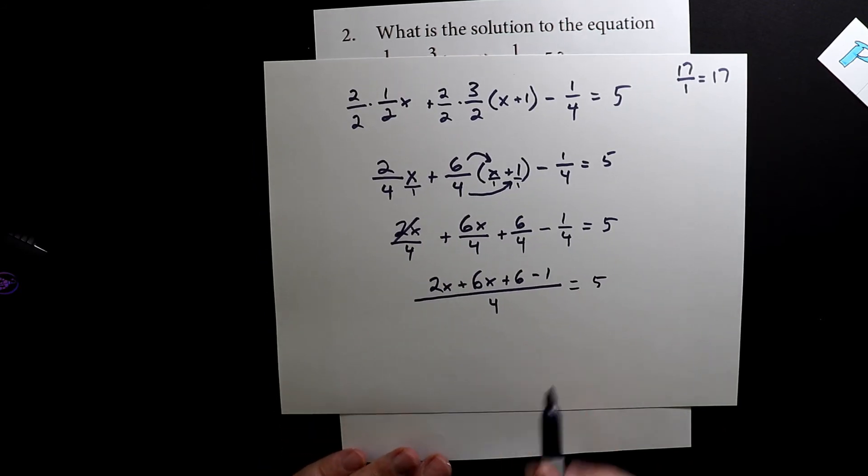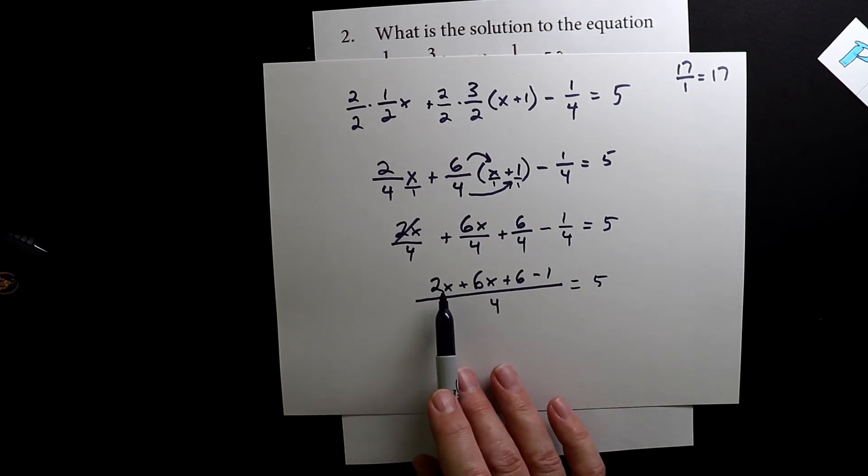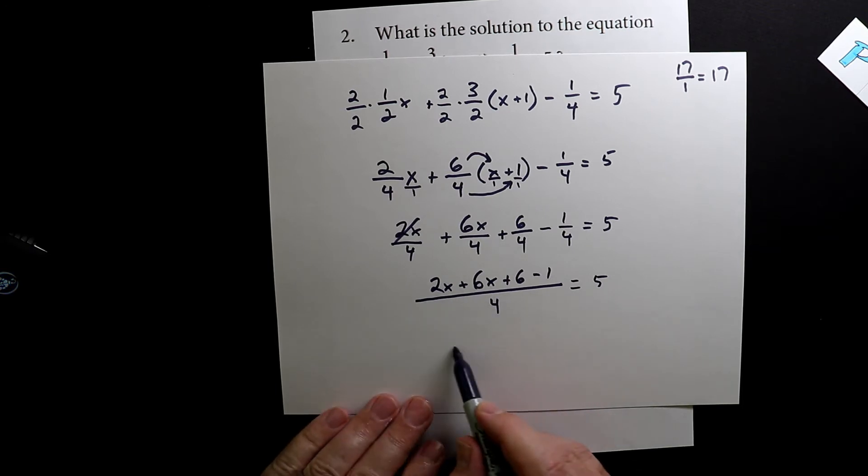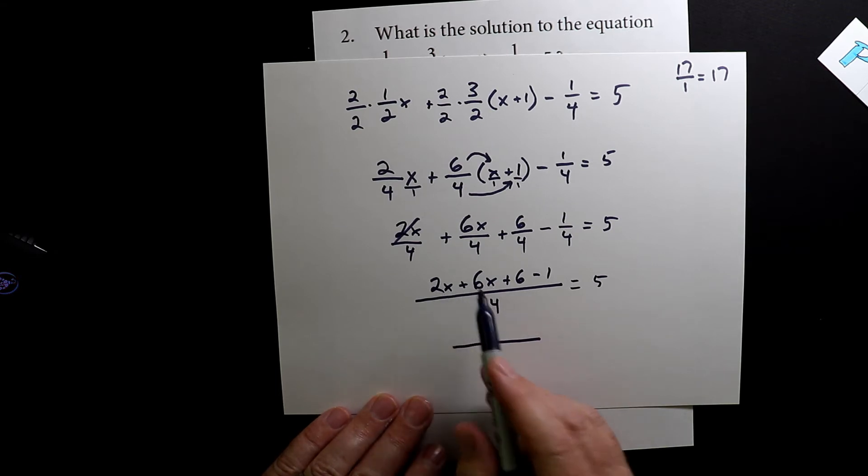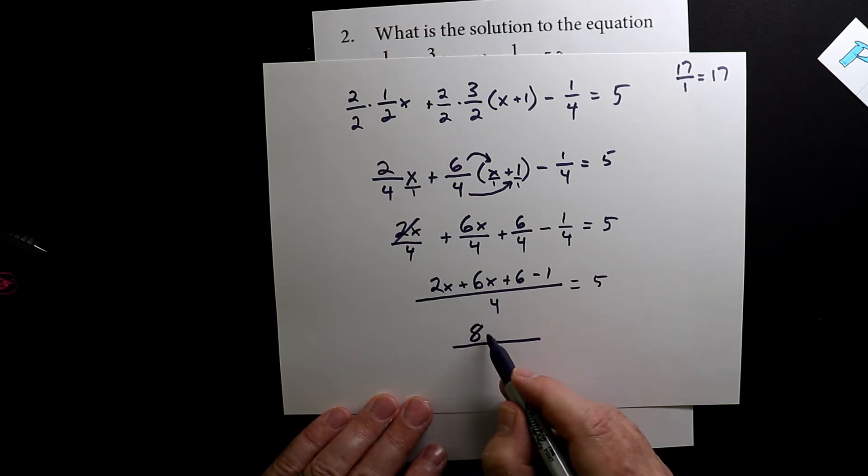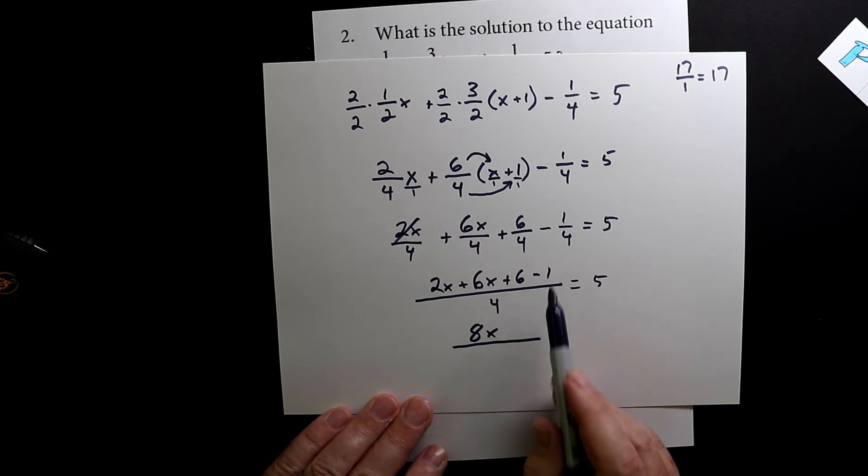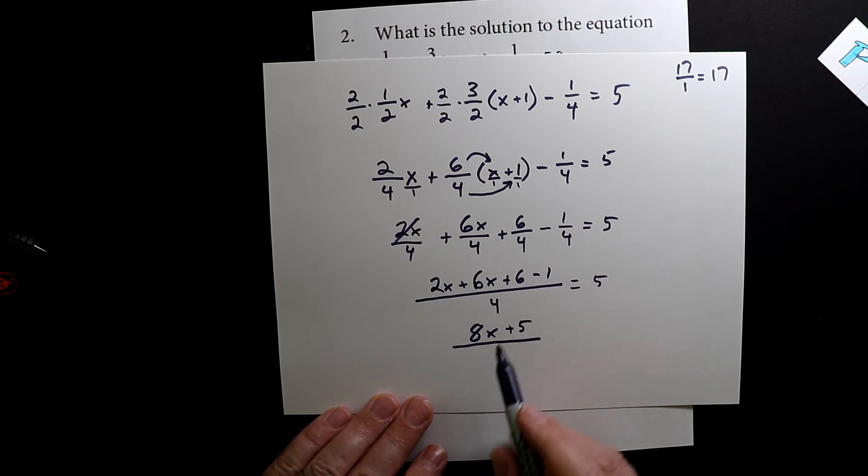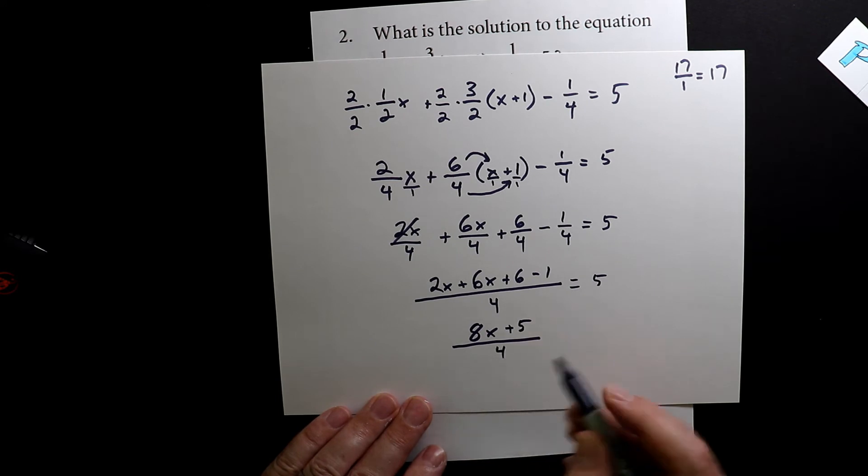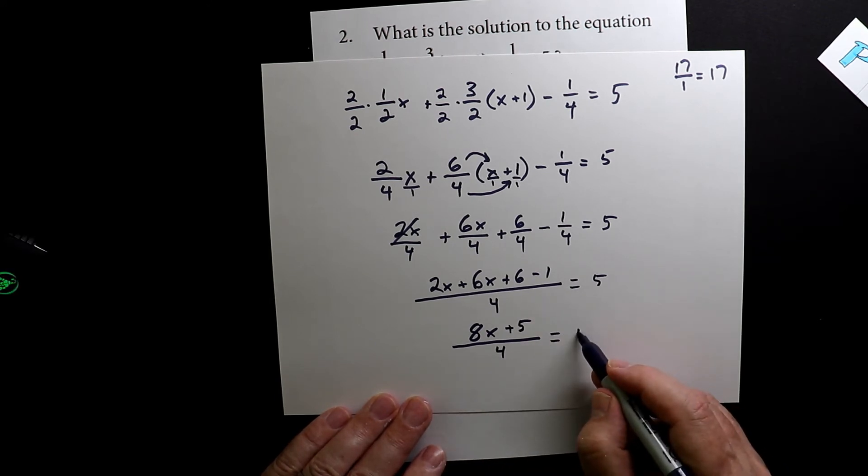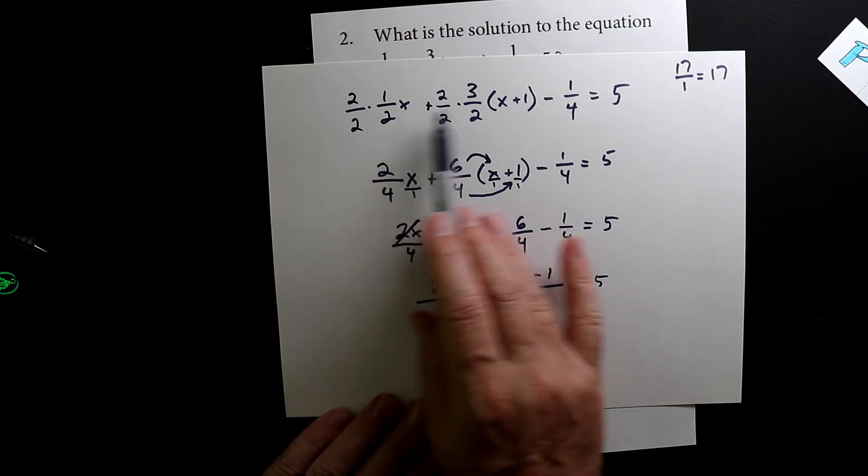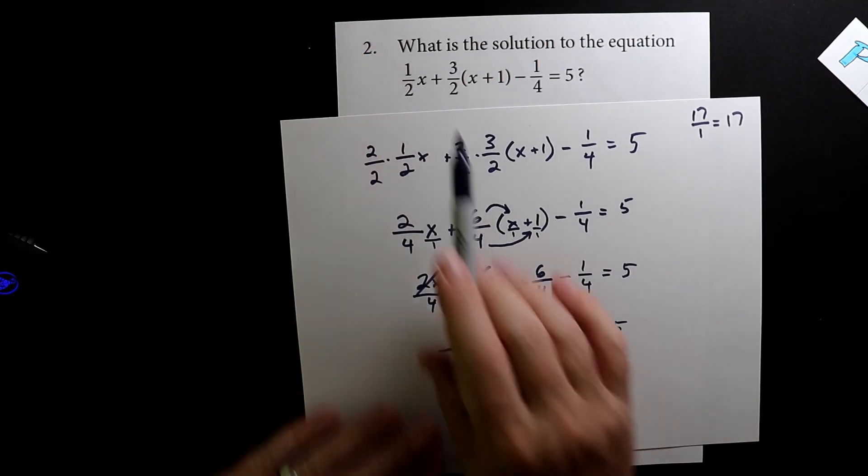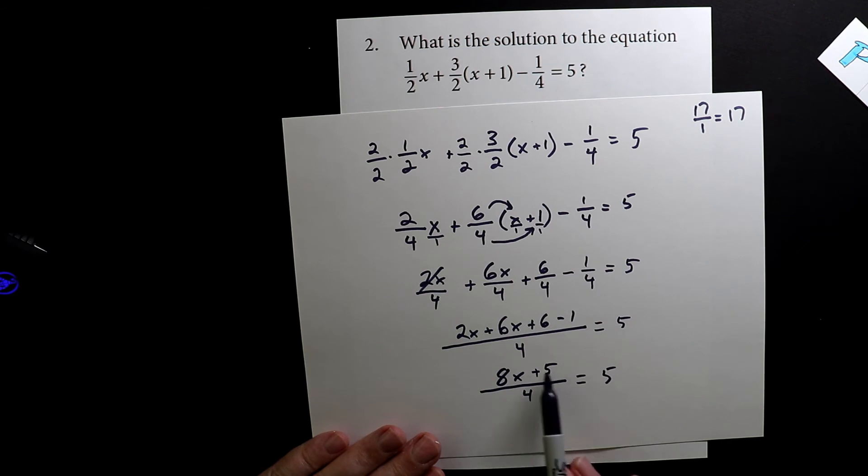Now, the next thing that we want to do is we want to combine like terms. The way we do that is we look at the ones that have x's and we combine those. So we have two x plus six x, two plus six is eight. Don't forget it's eight x. And then we have positive six minus one. Six minus one is a positive five. And then on the bottom is four. And all of this equals five.